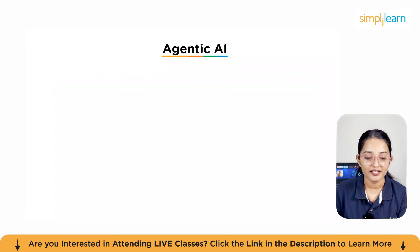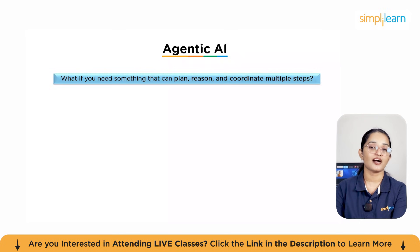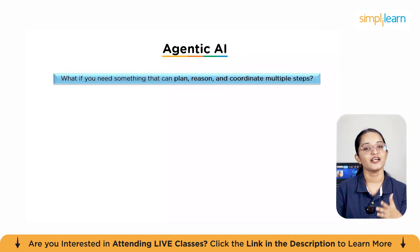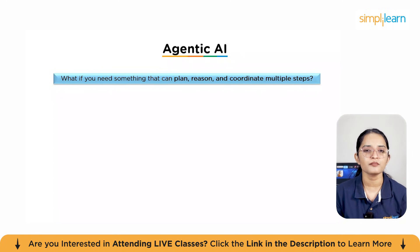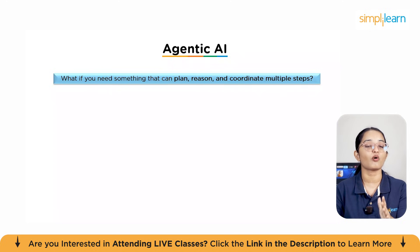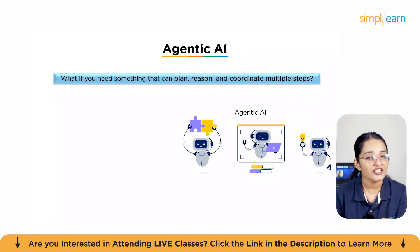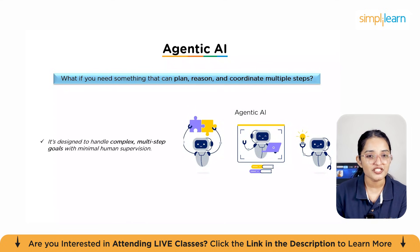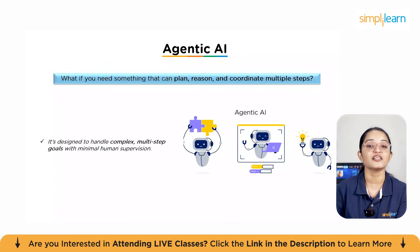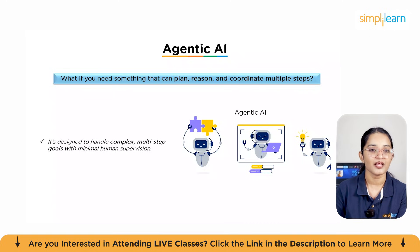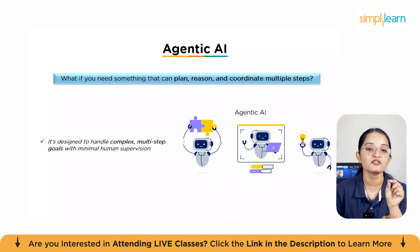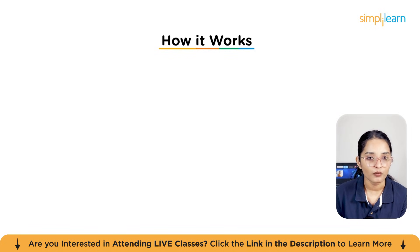Now we're talking about agentic AI — the autonomous orchestrator. So far we've seen generative AI which acts as a writer, and AI agents as task doers. But what if you need something that can plan, reason, and coordinate multiple steps? That's where agentic AI comes in. Agentic AI is like a super-powered version of agents — it doesn't just do one task; it can manage entire workflows, make decisions, and even call other agents to help. It's designed to handle complex, multi-step goals with minimal human supervision.